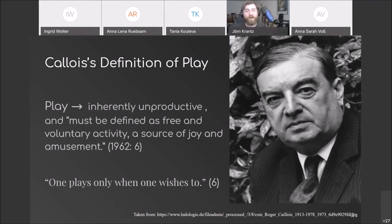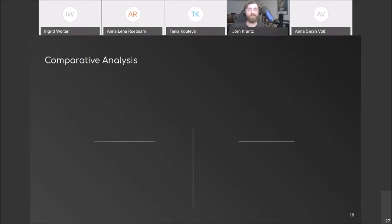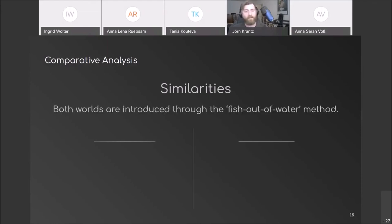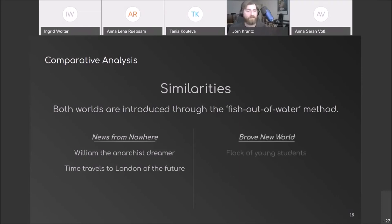So since we are now armed with a basic knowledge of the two societies as well as the theoretical tools, let us start the analysis by looking at the similarities. Both worlds are introduced to the reader through the fish-out-of-water method, meaning that the reader follows some inexperienced person who, just as we, is new to the world that unfolds before him. In News from Nowhere, we have William, the anarchist dreamer, who time travels to London of the future. In Brave New World, we have a flock of young students visiting the hatching and conditioning center. And this is pretty much where the similarities end.